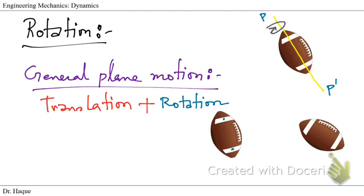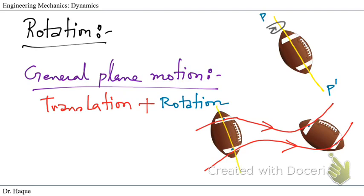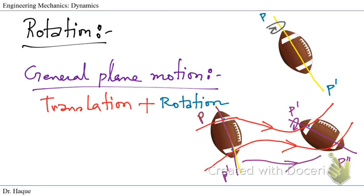Looking at the paths of those two particles, one path goes one way and another path goes another way. The axis of the ball at the initial position — let's call it PP1 — is not the same as the axis at the new position, which could be P-prime and P-double-prime. The axis changes because the ball is rotating while simultaneously moving from one position to another. It is rotating and translating at the same time, and this is called general plane motion.